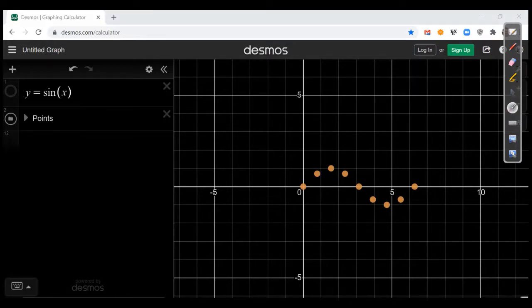So you'll see here (0,0), π/4 √2/2, π/2 1, 3π/4 √2/2. Here is π 0. This point right here is going to be 5π/4 negative √2/2, 3π/2 negative 1. We have 7π/4 negative √2/2, and 2π, 0.